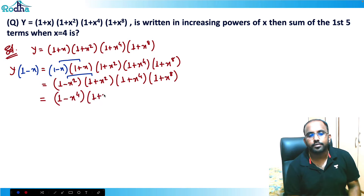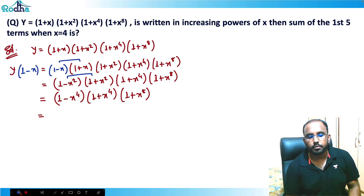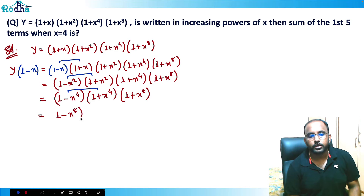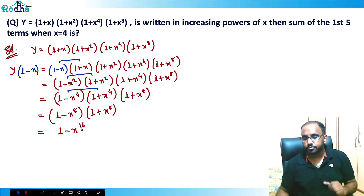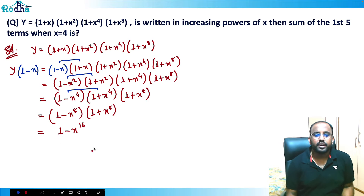Continuing, (1 - x⁴)(1 + x⁴) gives (1 - x⁸), and finally (1 - x⁸)(1 + x⁸) gives (1 - x¹⁶). So the left side becomes y·(1 - x) = (1 - x¹⁶).